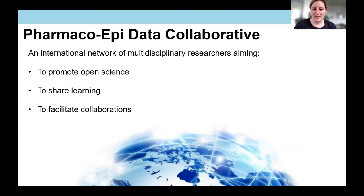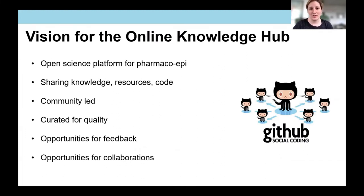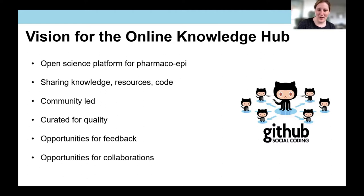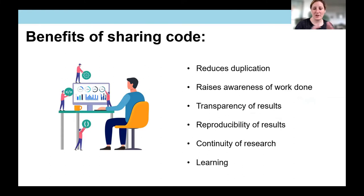This is one of the reasons we founded the Pharmacoepi Data Collaborative — and I'm sure this sounds familiar to many of you in the coding world. It's an international network of multidisciplinary researchers aiming to promote open science, share learning, and facilitate collaborations. One way we're doing this is by setting up an online knowledge hub built on GitHub — an open science platform for pharmacoepidemiology where we can share learning, knowledge, resources, and code, community-led but curated for quality.